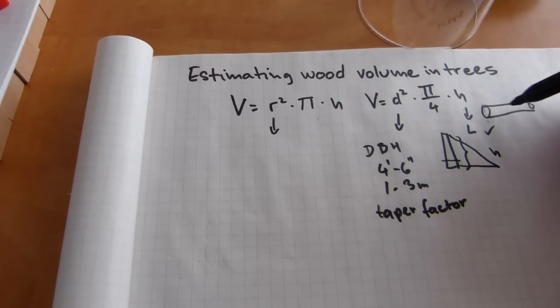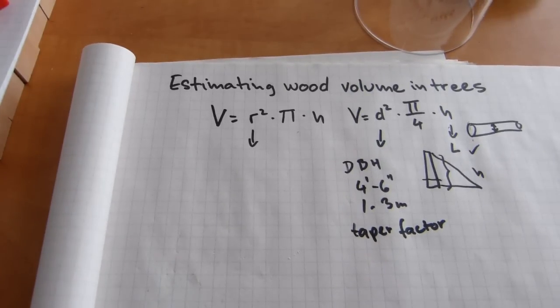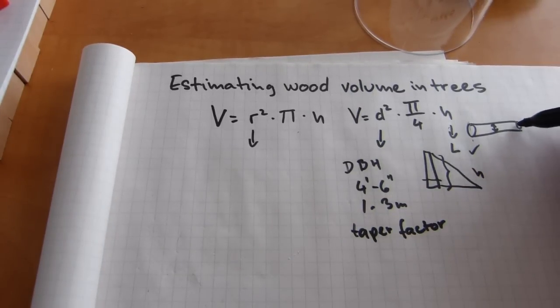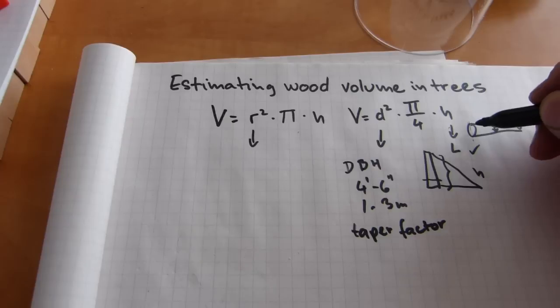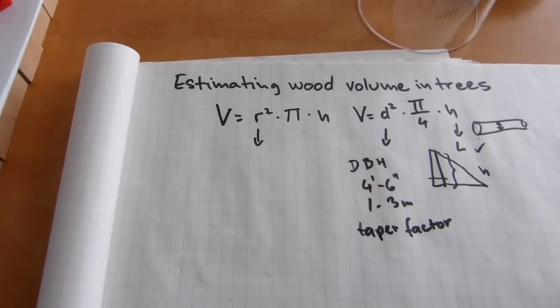If the tree is on the ground, you can measure diameter here at midpoint, where the difference between the narrow end and the wide end is averaged out. So that's where you take a measurement for the diameter.